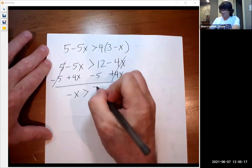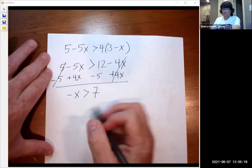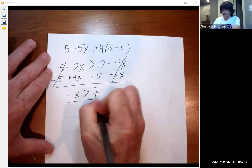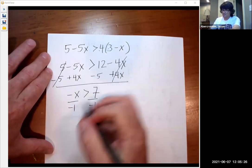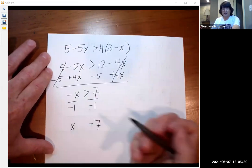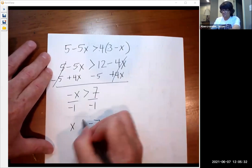So negative 5x plus 4x is negative 1x. And that's going to be bigger than 7. We have a negative x. So I need to either divide or multiply by negative 1. I'll just divide just like this. And you get x. And you get negative 7. And because you divided by negative 1, you do have to flip the sign.